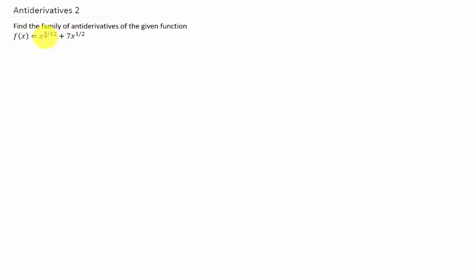We want to find the family of antiderivatives of this function right here. So I want to recall from the last video right at the end, we mentioned that the function whose derivative equals x to the n is 1 over n plus 1 times x to the n plus 1.